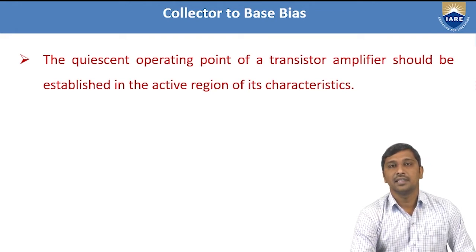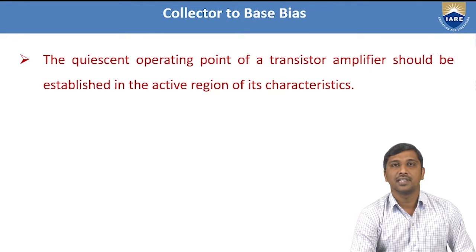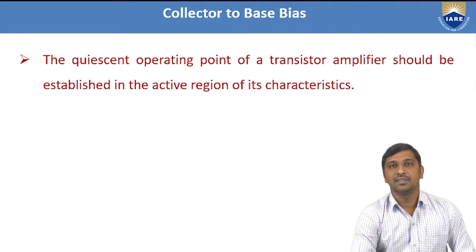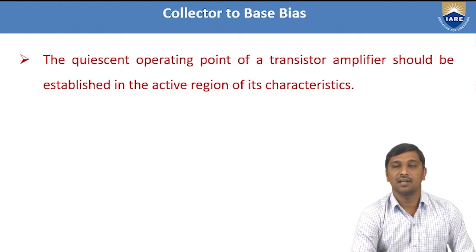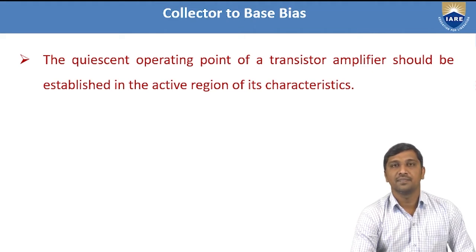If we consider different biasing methods: one is fixed bias, another is collector-to-base bias, and another is self bias. In fixed bias, the stability factor is always greater than 1 — specifically, it is defined as 1 plus beta. In common emitter configuration, the current gain lies between 50 and 500. Even at the minimum beta of 50, the fixed bias stability factor is 51. Therefore, fixed bias is not suitable for designing a perfect amplifier using a BJT.